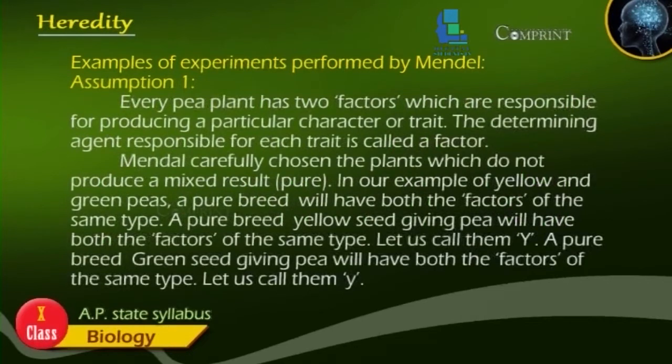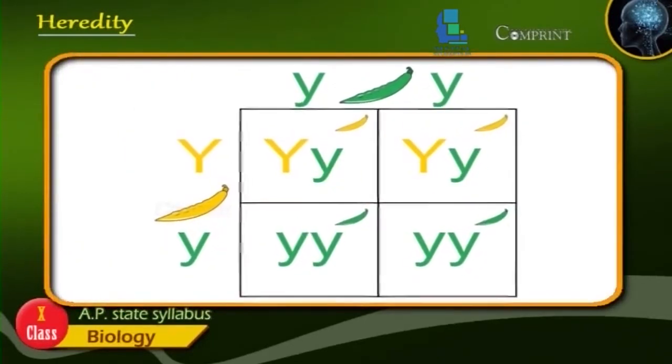Assumption 1: Every pea plant has two factors which are responsible for producing a particular character or trait. The determining agent responsible for each trait is called a factor. Mendel carefully chose plants which do not produce a mixed result. In the example of yellow and green peas, a pure breed will have both factors of the same type. A pure breed yellow seed-giving pea will have both factors of the same type.